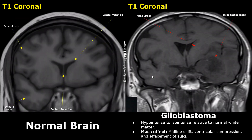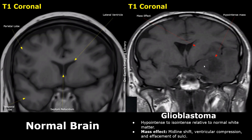These are coronal images of the brain. These are the left and right parietal lobes, and these are the left and right temporal lobes. In the right image, a mass is present in the left temporal lobe — it is hypo-intense to the white matter. It is causing a mass effect and midline shift. Ventricular compression is also noted.